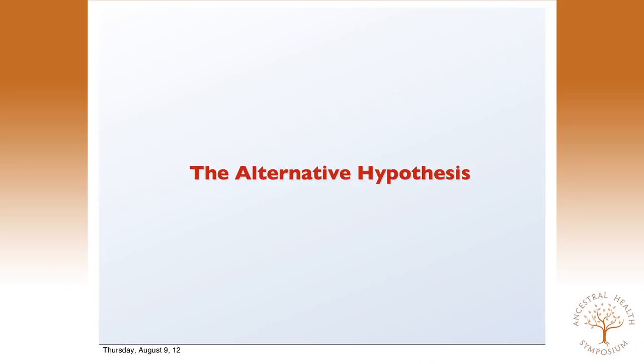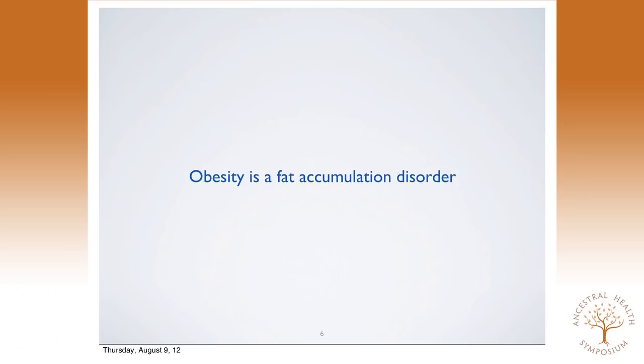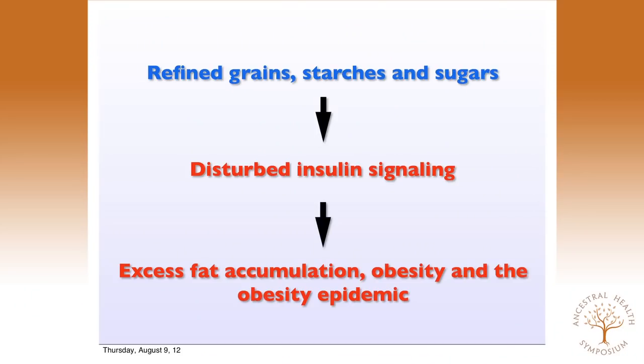The alternative hypothesis — the argument I've been making in my books, which comes originally from pre-World War II researchers in Europe — is that obesity is a fat accumulation disorder. To me, this seems like the simplest possible thing you could say about the subject: having too much fat is a disorder of having too much fat. What we want to know is what regulates fat accumulation. In this hypothesis, grains, starches, sugars, and carb-rich fruits disturb insulin signaling, and we end up with excess fat accumulation and the obesity epidemic.